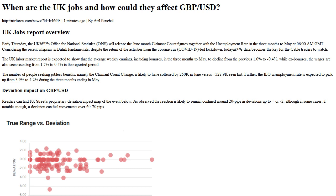...that the average weekly earnings, including bonuses, in the three months to May, are expected to decline from the previous 1.0% to 0.4%, while ex-bonuses, the wages are also seen receding from 1.7% to 0.5% in the reported period. The number of people seeking jobless benefits, namely the claimant count change, is likely to have softened by 250k in June versus 528.9k seen last.